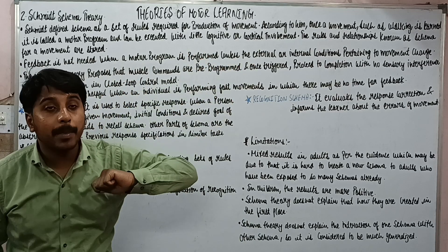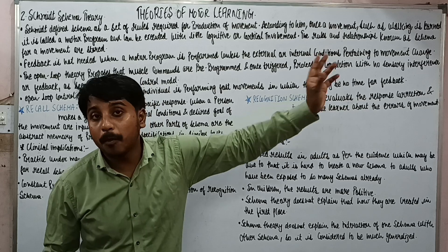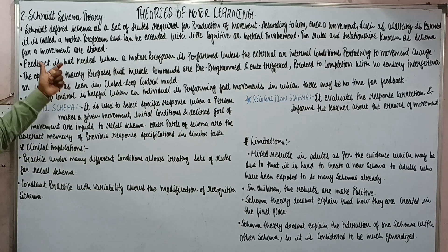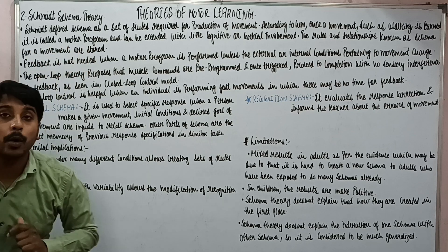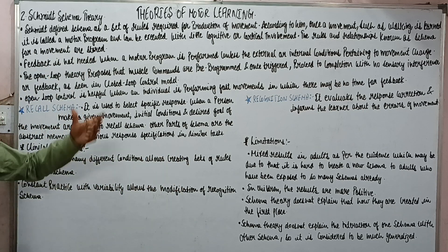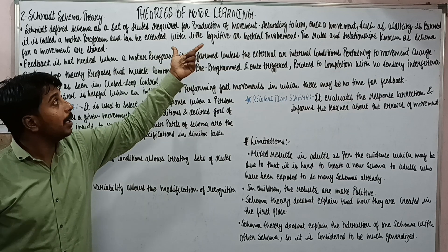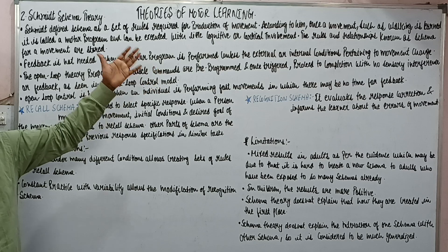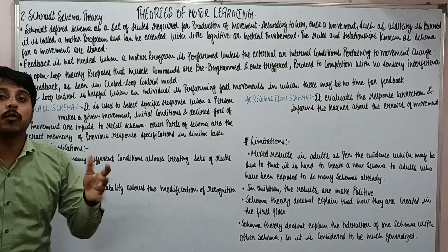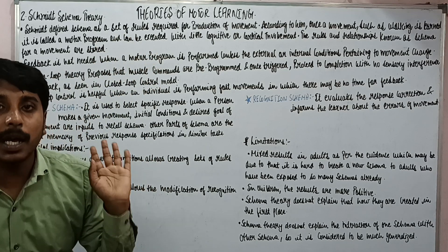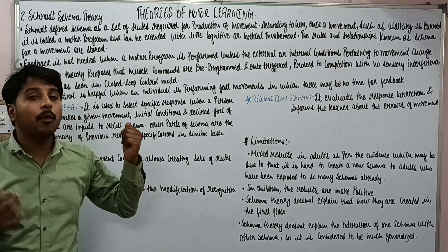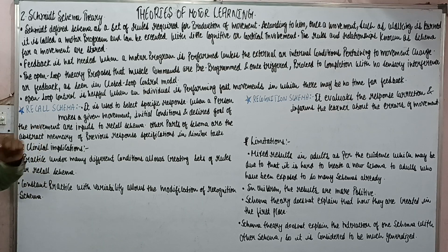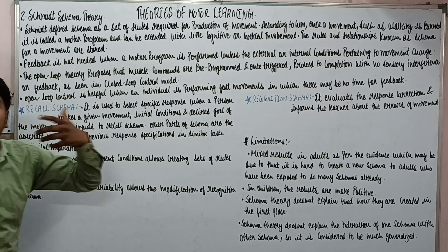According to Schmidt, once a movement such as walking is learned, walking is the movement program and after that it can be executed with little or no cognitive involvement. The rule and relationship is known as the Schema for the movement which is stored.